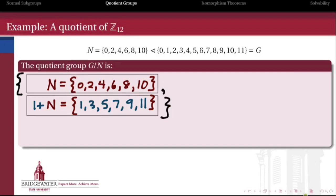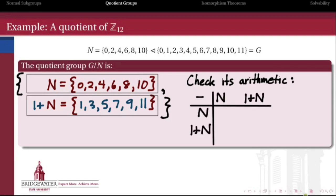And so the quotient group has those two elements, N and 1+N. Now what does the arithmetic look like? Let's make up a quick multiplication table, or really an addition table in this example, for these two cosets. Well, what are the N's? N is really just the even integers in Z mod 12, and 1+N are the odds. If I add evens to evens, I get evens. If I add odds to odds, I get evens. And if I add evens to odds, I get odds. Well, that multiplication table there is exactly the multiplication table that defines the cyclic group of order 2, Z mod 2.